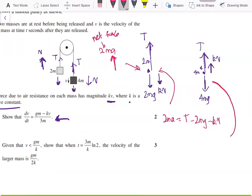And over here, using Newton's second law, the net force will be downwards 4ma. So the acceleration is 4ma, or net force is 4ma, which is 4mg minus T minus kv.